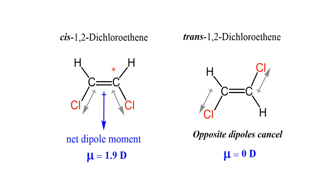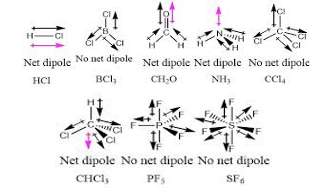These are important questions for your examinations. Some examples: BCl₃ molecule — no net dipole moment. Formaldehyde — has a net dipole moment. Ammonia (NH₃) — has a net dipole moment. Carbon tetrachloride (CCl₄) — no net dipole moment. SF₆ — no net dipole moment. Trigonal bipyramidal PF₅ — no net dipole moment. Chloroform (CHCl₃) — has a net dipole moment. The violet arrow in each diagram indicates the net dipole moment direction.